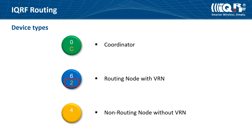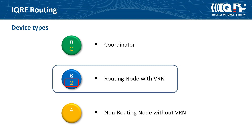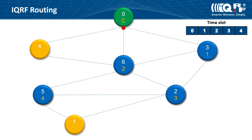Routing can be turned off in node configuration. It's good to do this on devices that are sleeping or moving. Routing should be done by nodes that are always up. Of course, the devices can wake up in a controlled manner, and then this device can be used as an IQRF router.